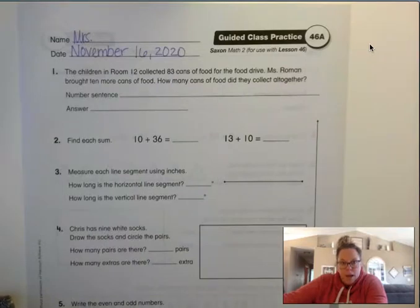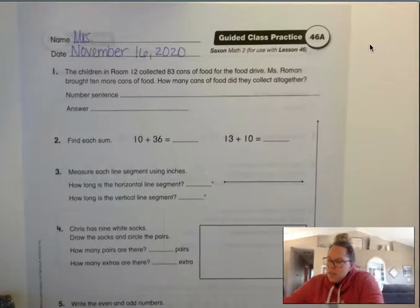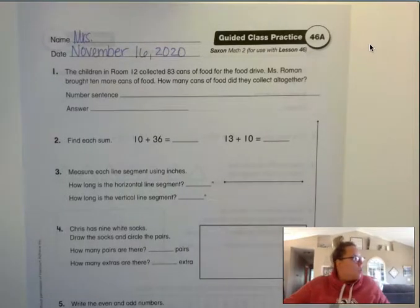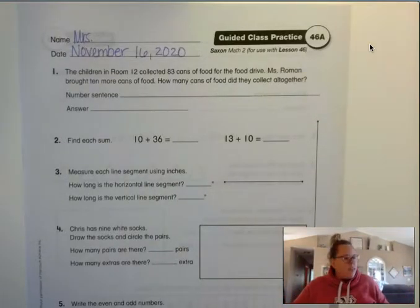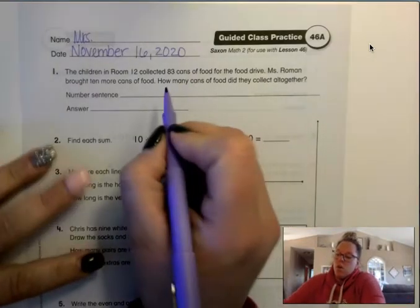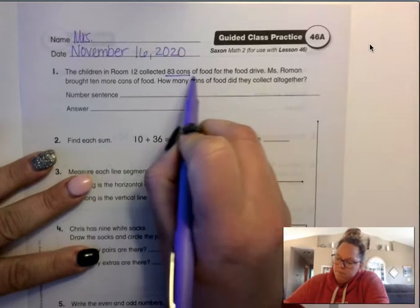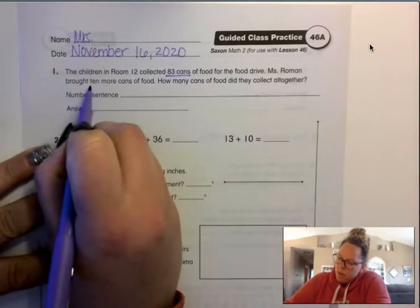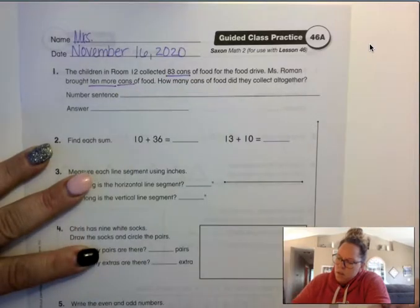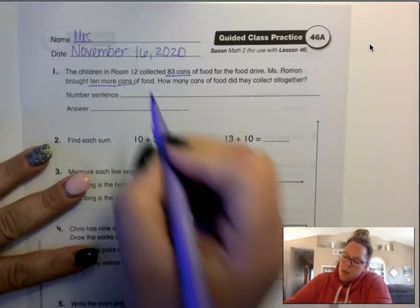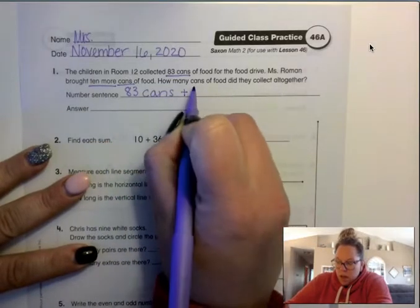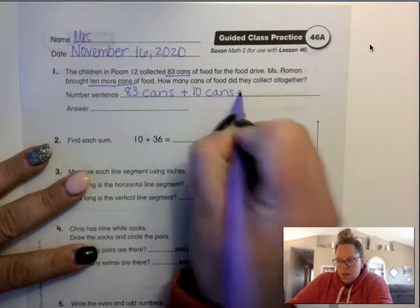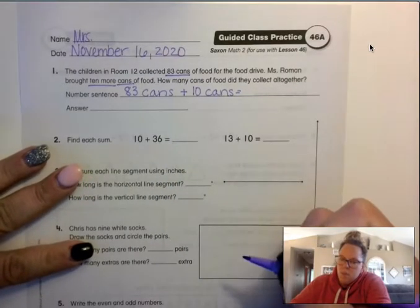The children in room 12 collected 83 cans of food for the food drive. Ms. Roman brought 10 more cans of food. How many cans of food did they collect all together? So I need 83 cans and Ms. Roman brought 10 more cans in, so we need the total number. We need 83 cans plus 10 cans equals how many total?